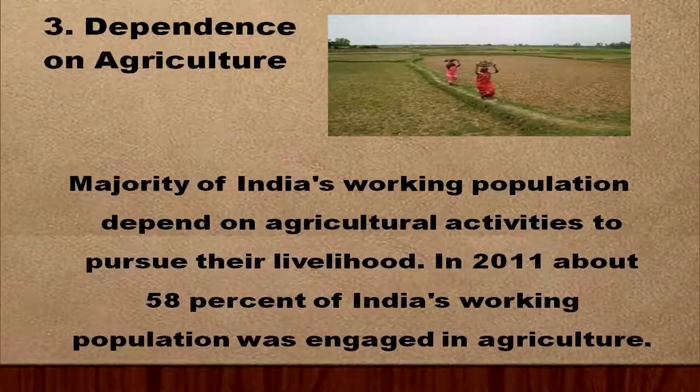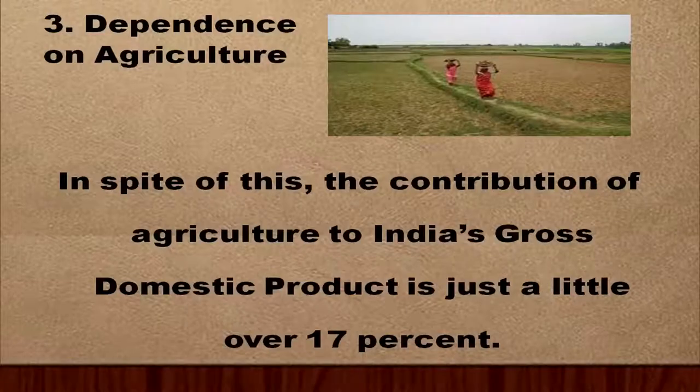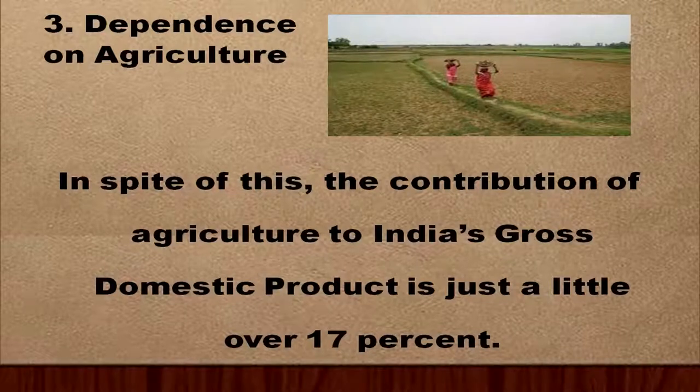This brings us to the third feature — dependence on agriculture. The majority of India's working population depends on agricultural activities for their livelihood. In 2011, about 58% of India's working population was engaged in agriculture. In spite of this, the contribution of agriculture to India's gross domestic product is only around 17%, meaning many people depend on agriculture but the output from it is very low.